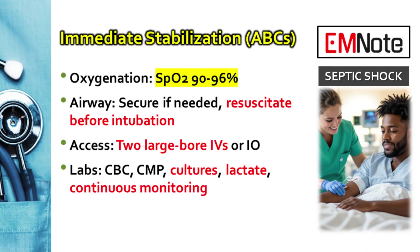In the first five minutes, things happen in parallel, not step-by-step. Oxygen: target SpO2 90–96%. Don't blast them with oxygen — avoid hyperoxia, as it may be harmful at the microvascular level. Airway: if you need to intubate, resuscitate first. Get the hemodynamics better before induction because those induction drugs can cause cardiovascular collapse. Have pressors ready right at the bedside before you even pick up the scope.